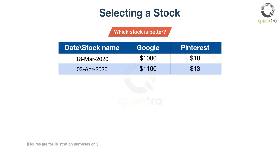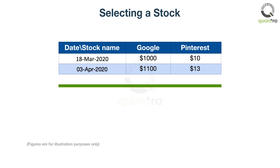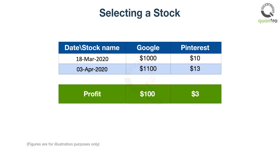On the surface, it looks like you have made a gain of $100 from Google, compared to $3 in Pinterest. So, Google performed better than Pinterest. But that is not true.